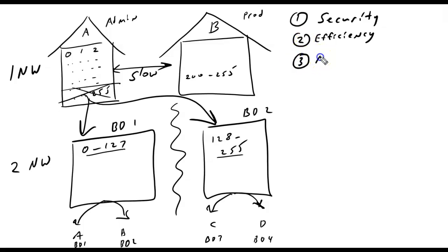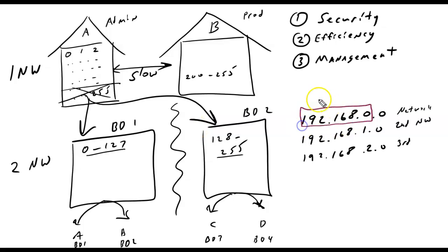A third reason I might do this is for management purposes. It's just much simpler to manage these. I'm not going to explain why this works right now, but let's take a number like 192.168.0.0 and let's say that this is my first network. Now I'll take another one, 192.168.1.0, and this is my second network, and then 192.168.2.0 is my third network.